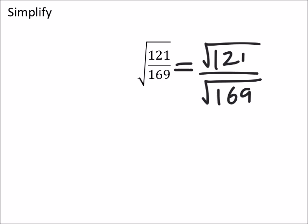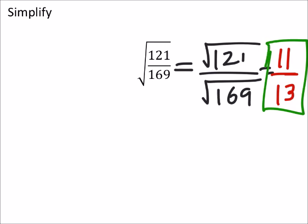And these are both perfect squares. The square root of 121 is 11, and the square root of 169 is 13. That's it. I mean, if you really wanted to, you could show that 121 is the same as 11...